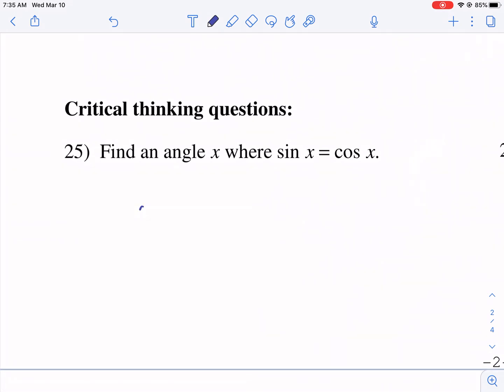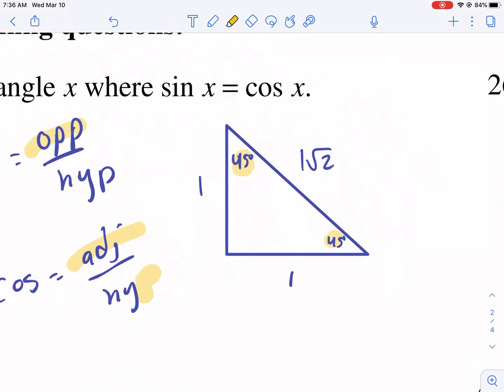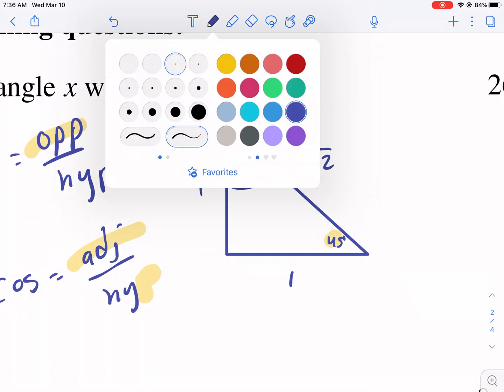Find an angle X where sine of X equals the cosine of X. Essentially, we need something where the opposite and adjacent sides are equal. Because we know sine equals opposite over hypotenuse, cosine equals adjacent over hypotenuse. So we need something where the opposite and adjacent are the same number. That's when you have a 45-45-90 triangle, an isosceles triangle. So the times that sine and cosine are the same is when it's 45 degrees.